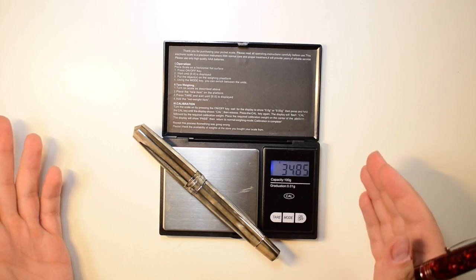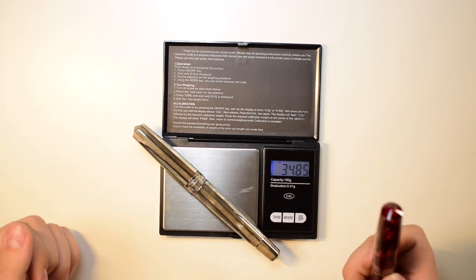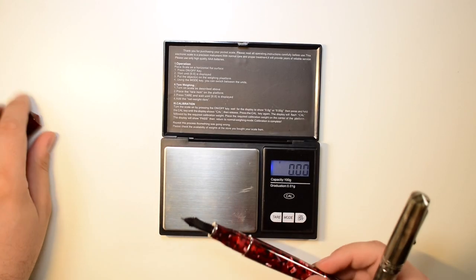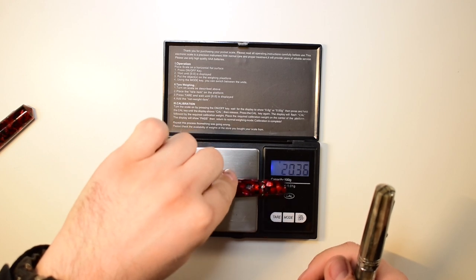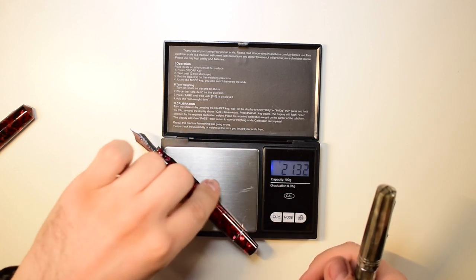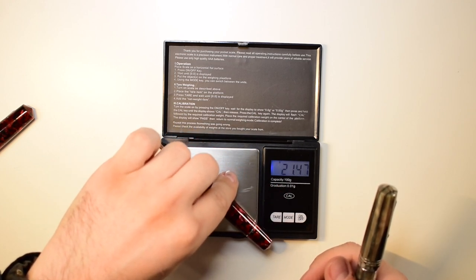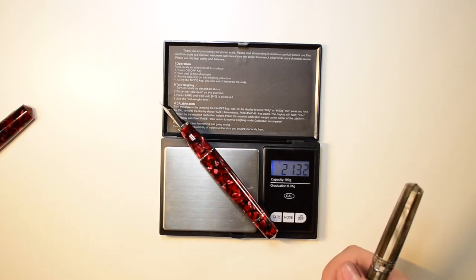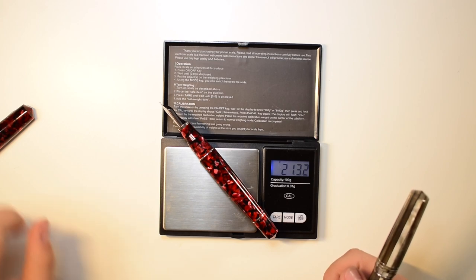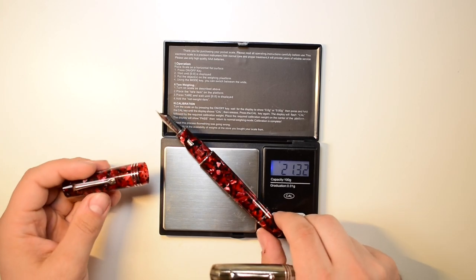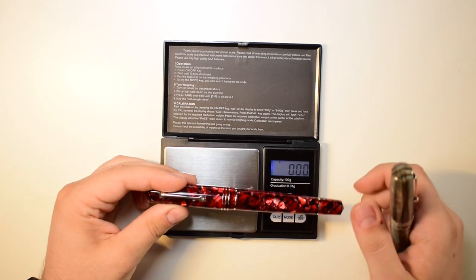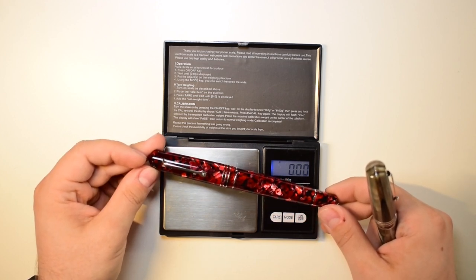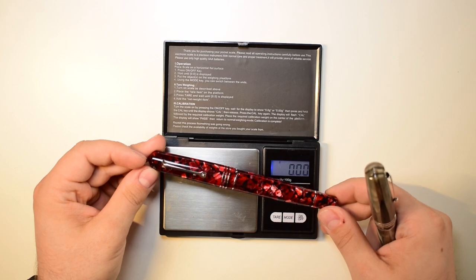So like I told you, it feels a bit lighter than the previous model. Now let's see uncapped weight, fully inked. We have 21.3 grams. Now I think it's time to have a writing sample with the pen and see the performances of the steel nib.